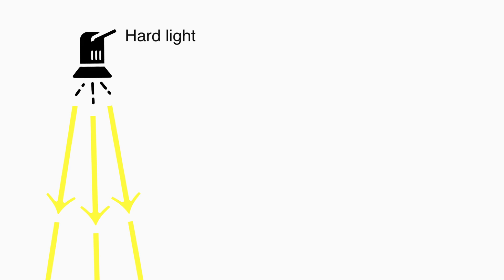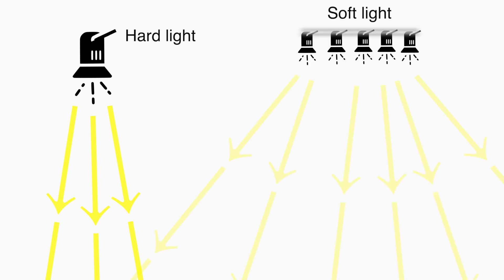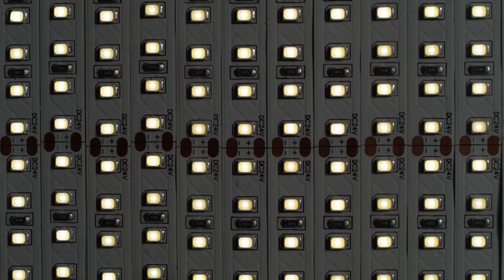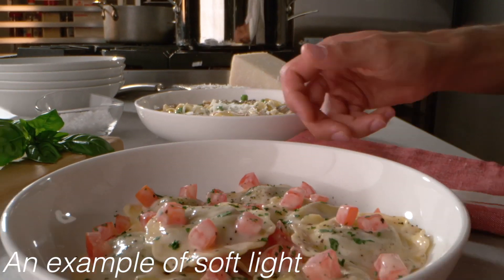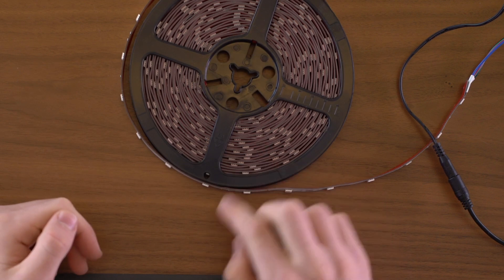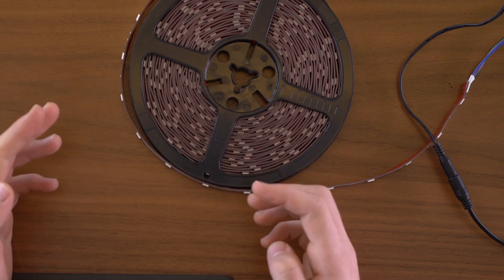In general you're gonna find two types of light sources out there: hard lights and soft lights. Hard lights are more like spotlights — all the light is coming from one central place, kind of like this thing here. Whereas soft lights like this panel have tons of small lights spread out evenly across them to create a more even, spread out, softer light beam.